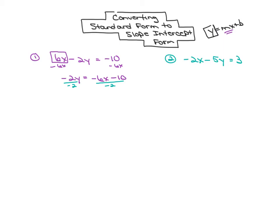Negative 2 divided by negative 2 is 1. And then on the right side, I'm going to distribute that division of negative 2 to both of my terms in the numerator. So negative 6x divided by negative 2 minus 10 divided by negative 2. Let's simplify. Negative 6 divided by negative 2 is a positive 3. So 3x minus 10 divided by negative 2 is negative 5.